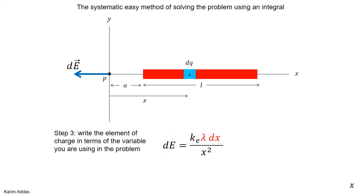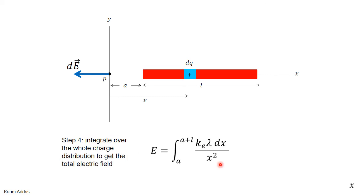Step four is to do the integration. The limits of integration are determined by finding where the first and last elements are located. The first element is located a distance a away, so the lower limit is a. The last element is located a distance a plus l away, so the upper limit is a plus l. This is how you would solve a problem on homework or an exam — you don't write down the limit of sums.